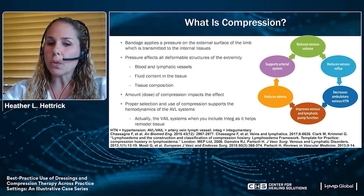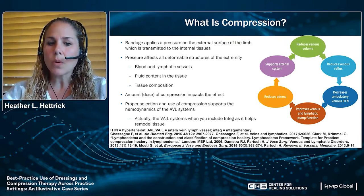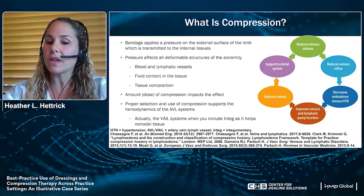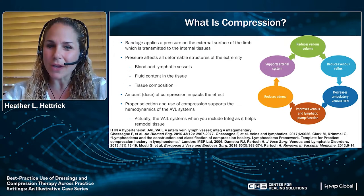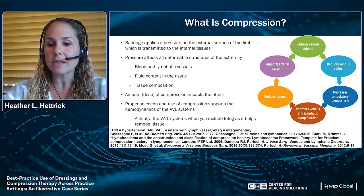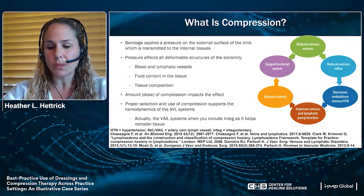The dose or the amount of compression is what impacts the effect. Proper selection and use of compression supports the hemodynamics of the AVL systems — what I call the veil — which is the venous, the arterial, the integumentary, and the lymphatic systems collectively, as it helps to also remodel the tissue.